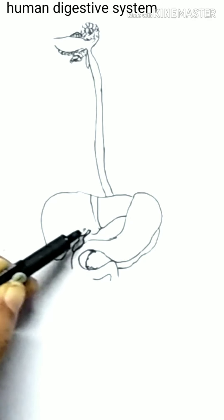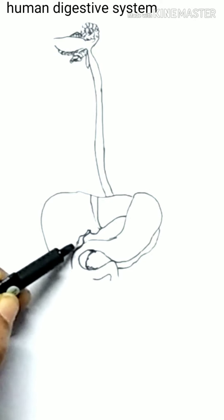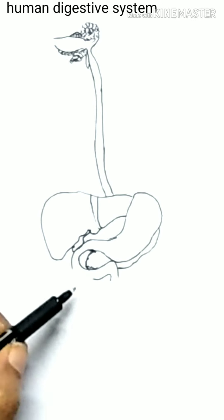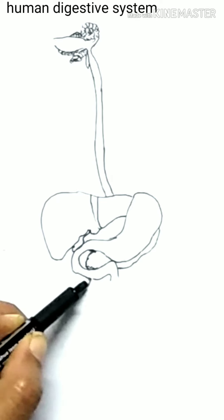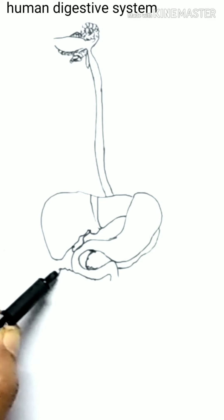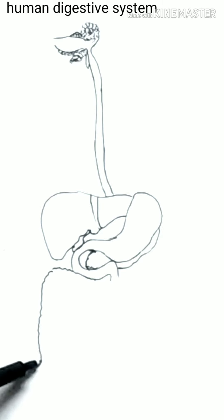Digestion in small intestine is the longest part of elementary canal. It is the site where complete digestion of carbohydrates, proteins and fats takes place.